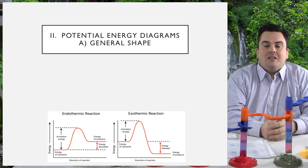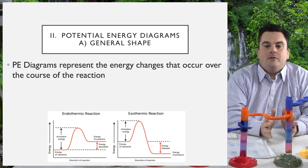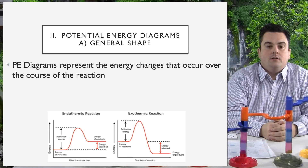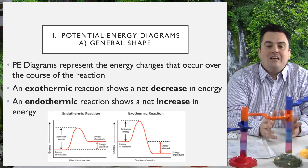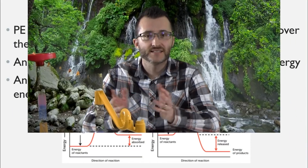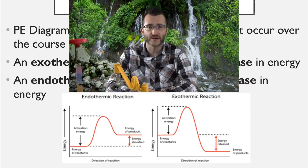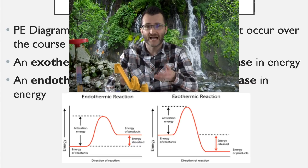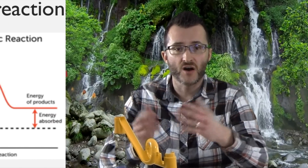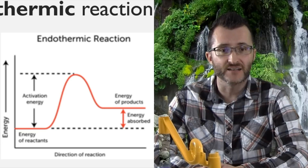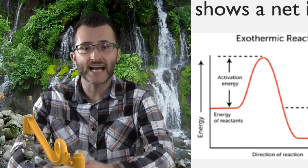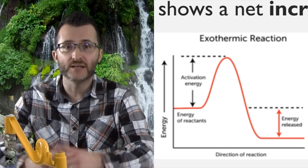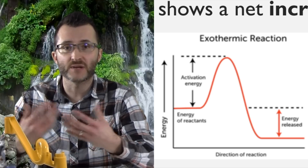Potential energy diagrams — let's talk about their general shape. PE diagrams represent the energy changes that occur over the course of a reaction. An exothermic reaction shows a net decrease in energy; an endothermic reaction shows a net increase in energy. Looking at the two example diagrams below, focus on that red line — where it begins and where it ends. The first diagram starts low and ends higher, meaning we've absorbed energy, so it's endothermic. The second diagram starts high and ends low, so it's releasing heat to the surroundings — that's an exothermic reaction.